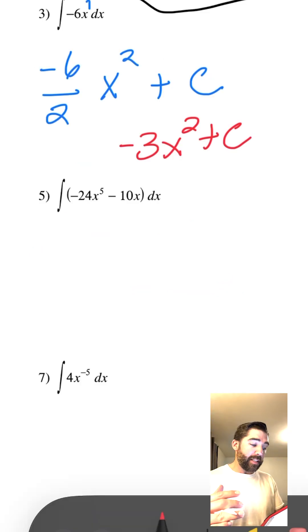Negative 24x to the 5th minus 10x, that is all being, that's in an integrand right here. So here it is.